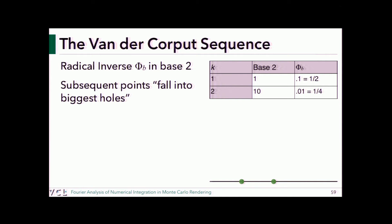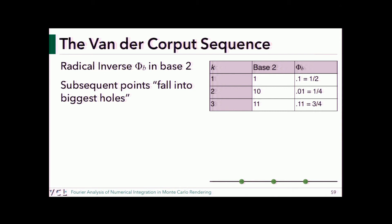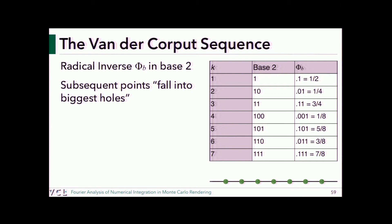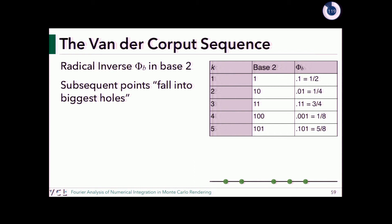The van der Corput sequence places samples at 1/2, 1/4, 3/4, 1/8, 5/8, 3/8, 7/8 — a regular-looking pattern, but the way it was generated is progressive (you can stop at any point). However, in 1D this ultimately gives a regular grid, so by itself it's not very useful — but this theory was used to develop more clever algorithms.